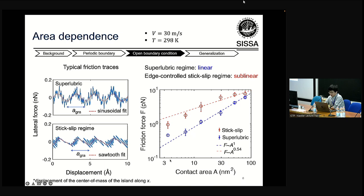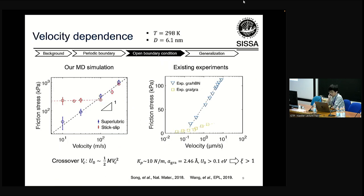For the area dependence of kinetic friction, the superlubric regime gives a linear dependence, but for the edge-controlled stick-slip regime it is sublinear. For velocity dependence, the superlubric regime gives linear dependence, and the stick-slip regime at low velocity shows apparent sublinear behavior, then returns to linear at higher velocity. The crossover velocity can be determined by the corresponding equation.